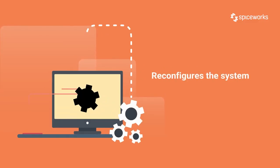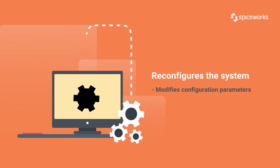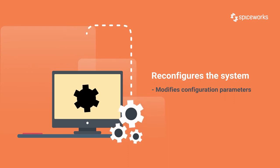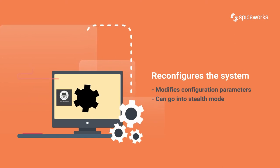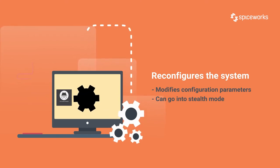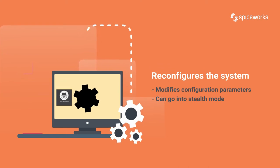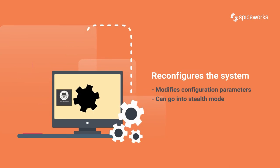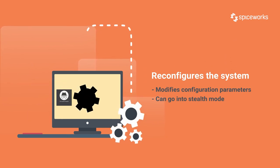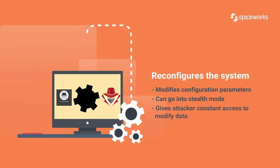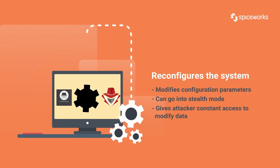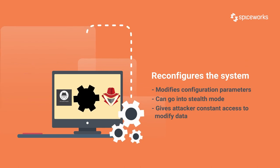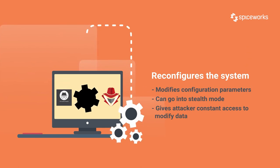Fourth, a rootkit can reconfigure the system. Once it has gained access to the network, system, or computer, it can go into stealth mode, making it harder for ordinary security tools to identify it. Rootkits can maintain a continual state of presence, making them difficult or nearly impossible to remove even after a system reboot. A rootkit can give an attacker constant access or modify security authorization privileges, and its detection is difficult as it poses a severe risk by providing a hacker with complete and unmitigated access to the system.